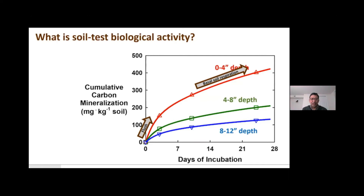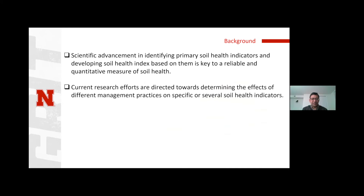A lot of effort is going into identifying key indicators — we are not going to tell producers to do 20 different measurements. We have to identify a few key indicators that give a good soil health status. Beyond that, a lot of research is going toward determining how different management practices can improve or affect soil health. My point today is about benchmarking — we need to know not only the direction we're heading but how far we can stretch in terms of managing soil to improve its health.